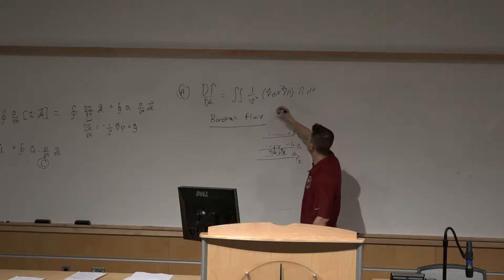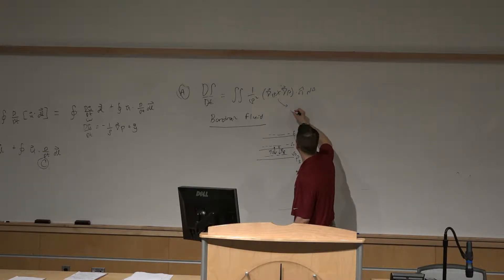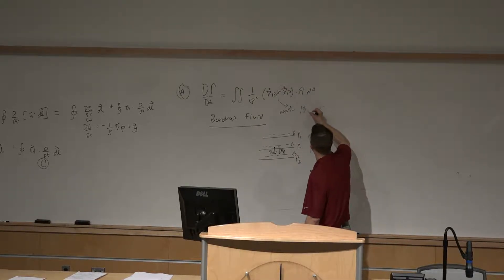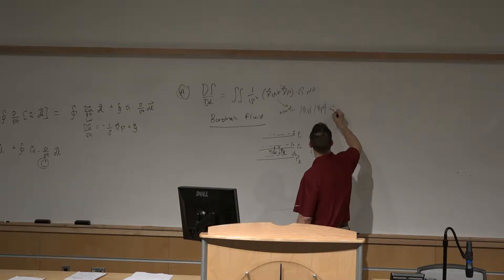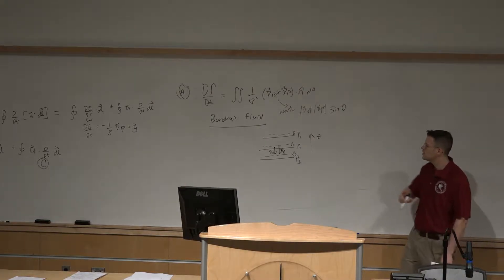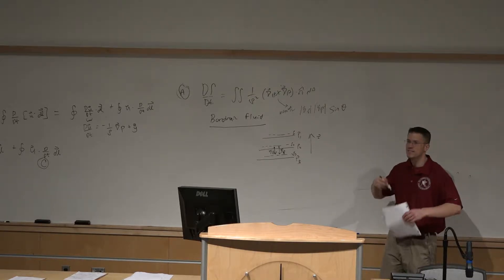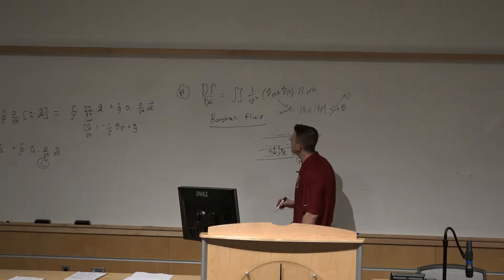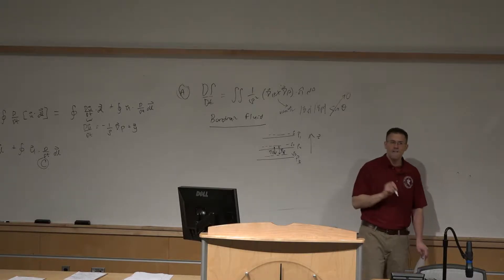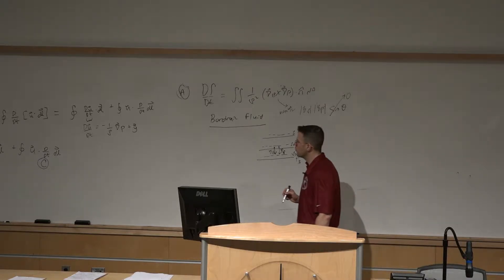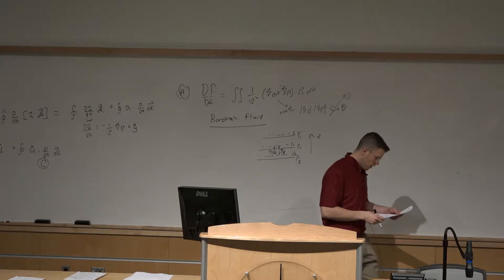When we compute del_rho cross del_P, the magnitude is the magnitude of del_rho times the magnitude of del_P times the sine of the angle between them. For a barotropic fluid, that angle is zero, and sine of zero is zero. So d_gamma/dt is zero — there is no generation or loss of circulation for a barotropic fluid.